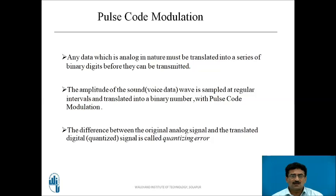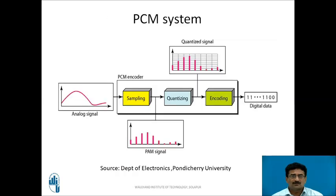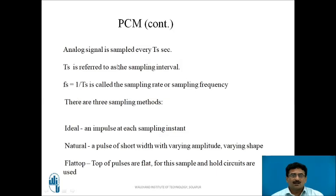The difference between the original analog signal and the translated digital signal is called quantization error — when the real-time sample value is approximated to a known standard value, some difference always occurs. The analog signal is sampled every Ts seconds, called the sampling interval. The sampling frequency is calculated as fs = 1/Ts.